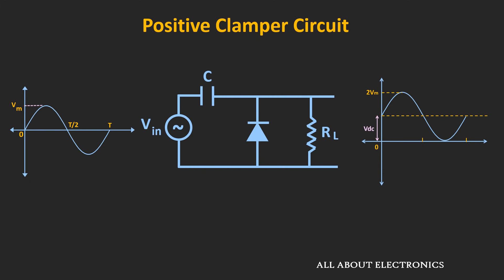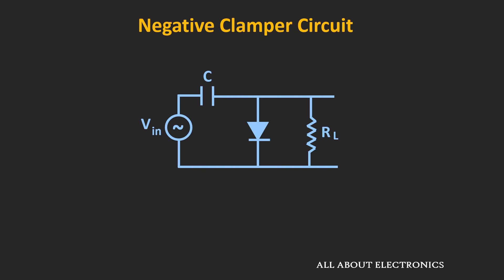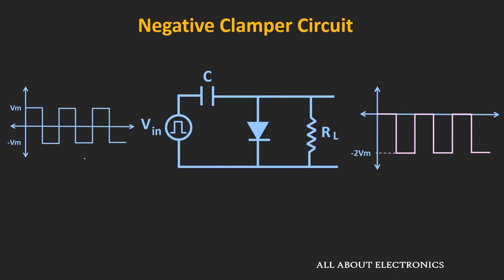In this circuit, just by reversing the direction of the diode, it can be converted into the negative clamper circuit. We will analyze this circuit by considering the square wave as an input waveform. If we apply a square wave which is varying from Vm to minus Vm, then at the output we will get this type of waveform — meaning the entire waveform will get shifted downwards by Vm volts.